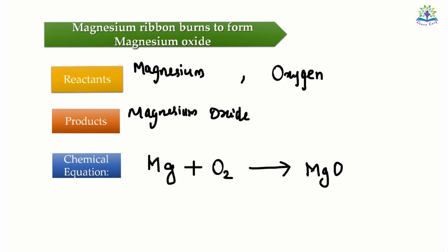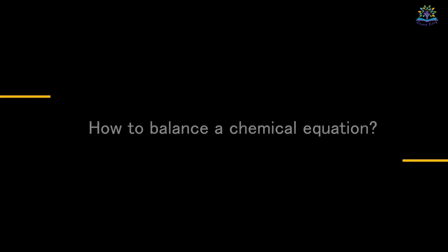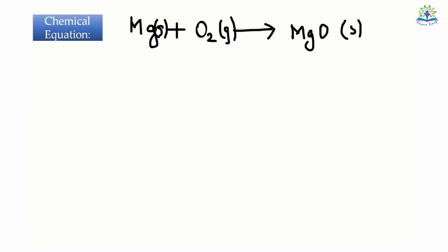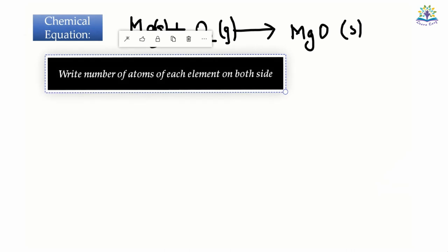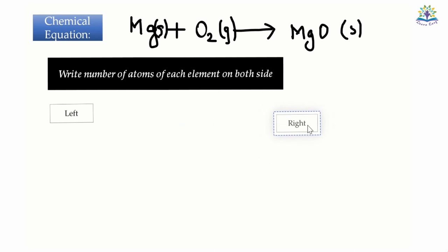This is not a reversible reaction, so we can draw the arrow with its head pointing towards the product. The equation that you see here doesn't have an equal number of atoms of each element on the left and right side. This kind of equation is known as a skeletal equation. Now we have to balance this chemical equation. In order to balance it, we will use a two-step process, which we will be repeating until the number of atoms on both sides for all the elements are balanced.